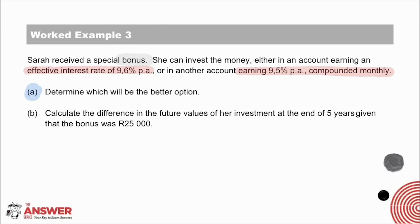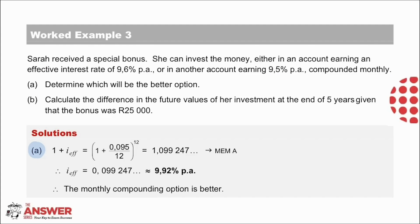Let's look at the solution. We have the effective interest rate of 9.6% per annum. So let's take the nominal interest rate of 9.5% per annum compounded monthly and work out the effective interest rate for this. The equation gives us 9.5% divided by 12, to the power of 12. The effective interest rate works out to 9.92% per annum. Comparing the two effective rates, the 9.5% compounded monthly option is better than the 9.6% effective rate.